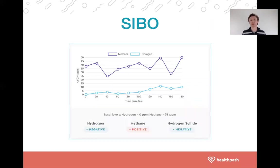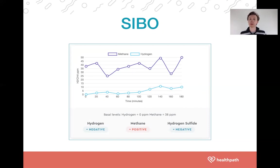Regarding SIBO testing — we do have a separate YouTube video on this which I'll link. The breath test looks for bacterial overgrowth in the small intestine, but it also looks for what we call a methanogen overgrowth. Methanogens are organisms most of us have in our guts that produce methane. Methane gas has been quite strongly associated with constipation in the research, and as a result, people with elevated methane production often experience bloating as well.